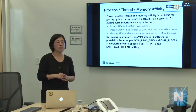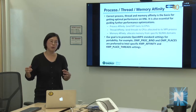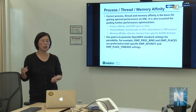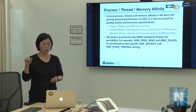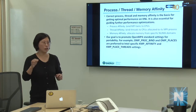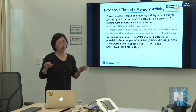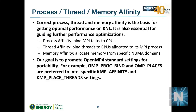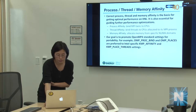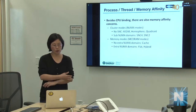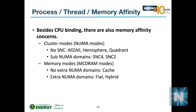Memory affinity determines where data is placed. We also want portability, so we prefer OpenMP 4 standard settings that work across all compilers rather than Intel-specific settings. There are multiple cluster modes (quad, SNC2, SNC4) and memory modes (cache, flat), and all combinations affect affinity.